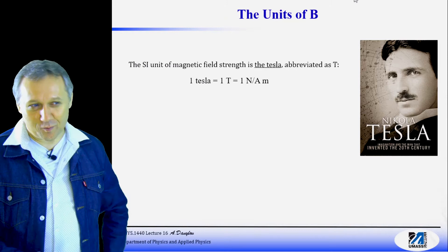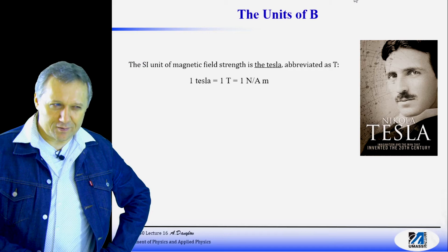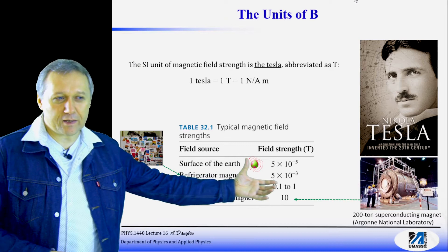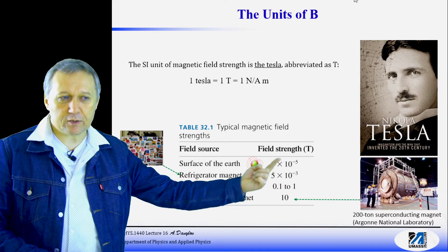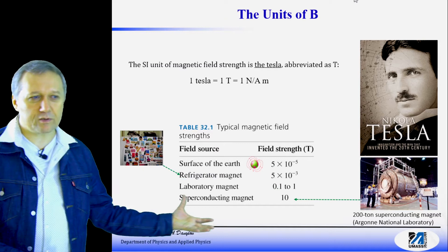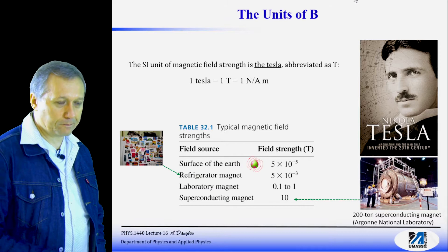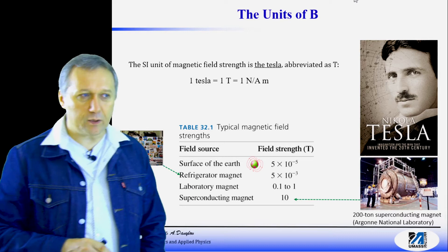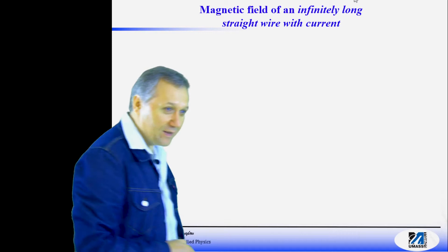One Tesla is a gigantic magnetic field. To give you a sense of scale: the magnetic field on the surface of the Earth is on the order of 10⁻⁵ Tesla; fridge magnets are about 10⁻³ Tesla; one of the strongest magnets is only about 10 Tesla. So one Tesla is a very, very strong magnetic field. Now we know the fundamental law to find magnetic field and its units - Tesla. The simplest case to apply Biot-Savart law is an infinitely long straight wire.